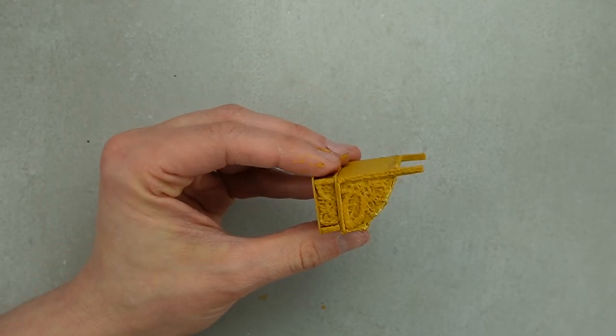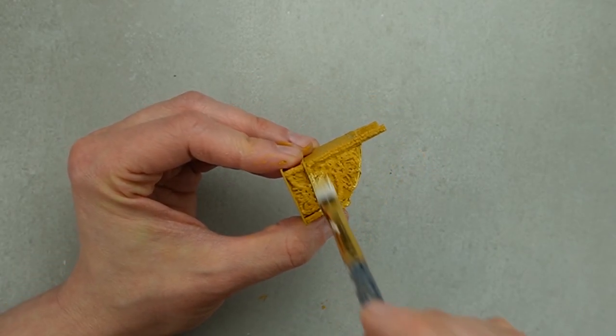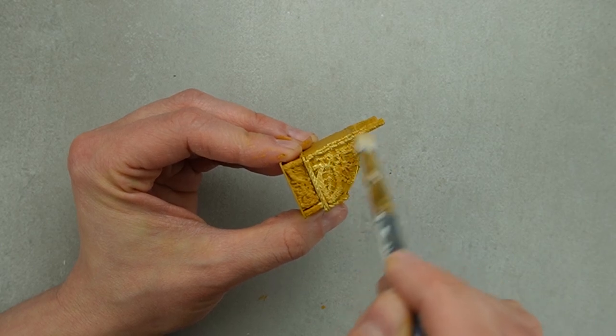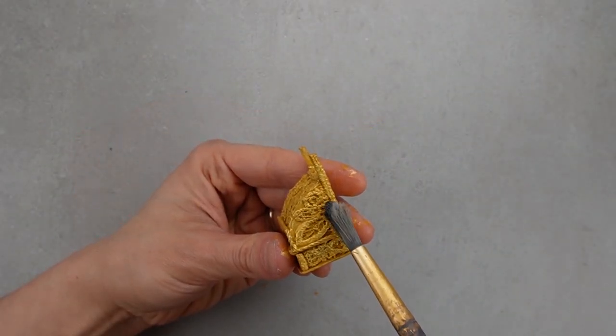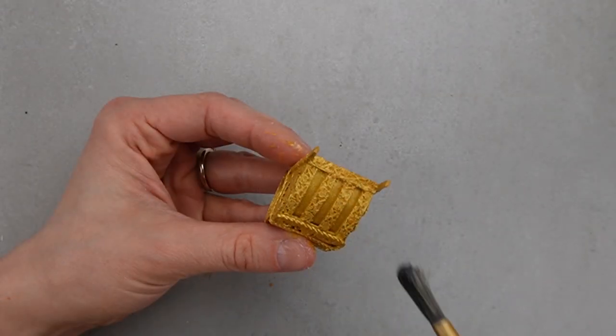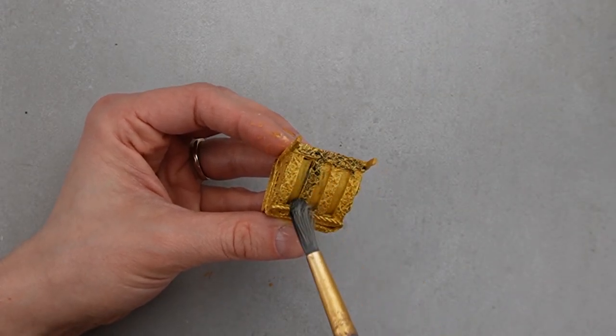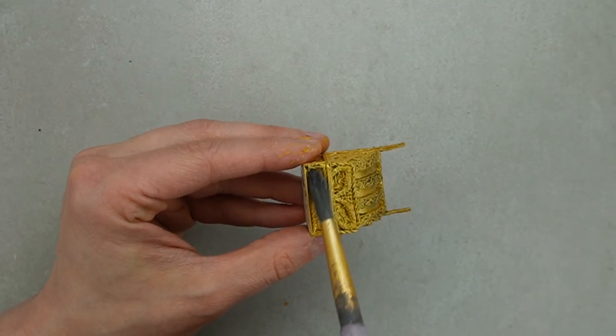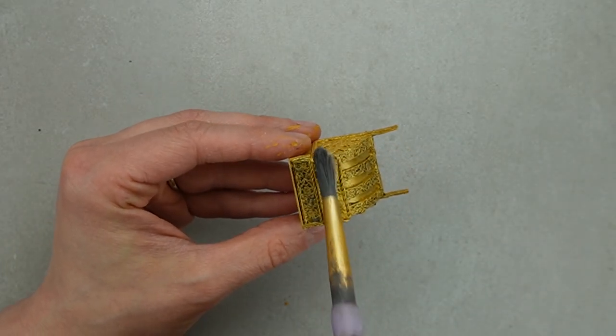You could use this technique to mimic carved wood by painting it brown and other wood tones. This step's a little scary because I already like how this looks, but to emphasize all of the different textures, I'm adding a bit of black wash. This is just watered down black acrylic paint.